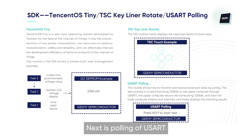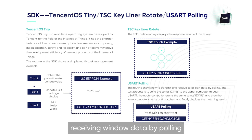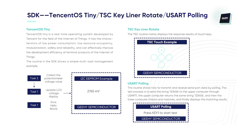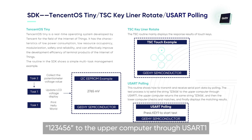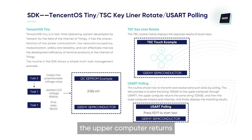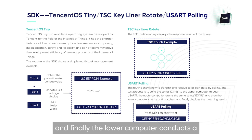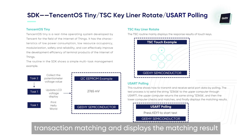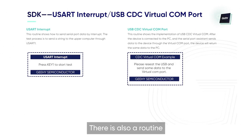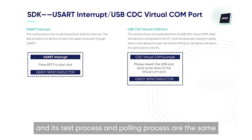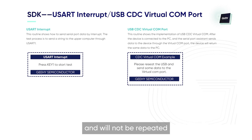Next is polling of USART. The routine receives window data by polling. The test process is to send the string 123456 to the upper computer through USART1. The upper computer returns the same string 123456, and finally the lower computer conducts a transaction matching and displays the matching result. There is also a routine which adopts interrupt mode, and its test process and polling process are the same.